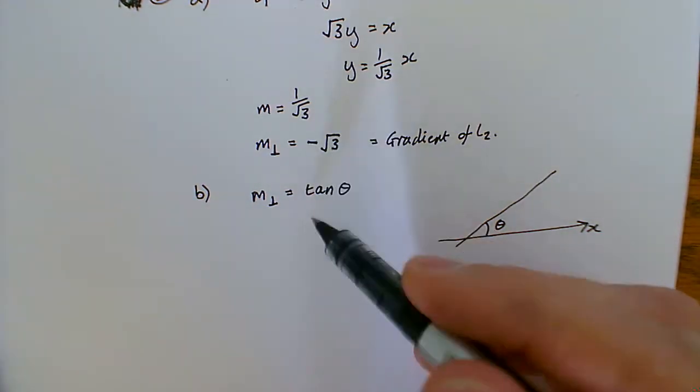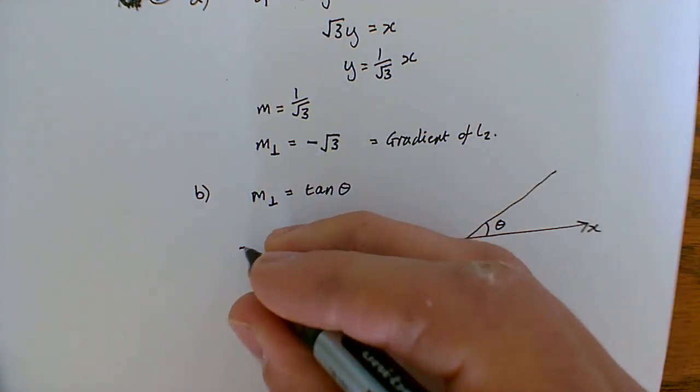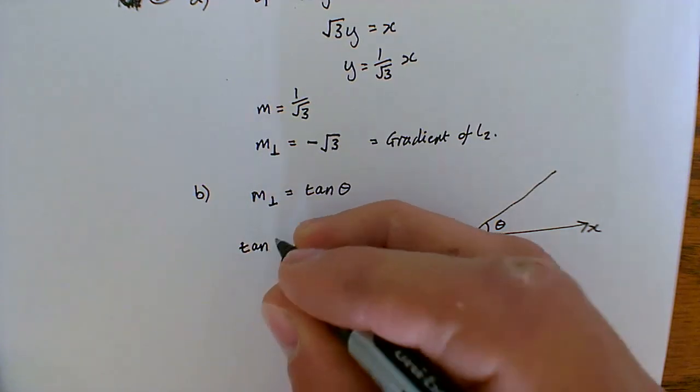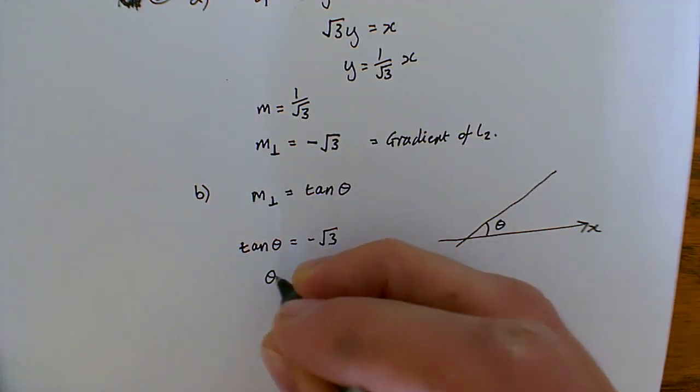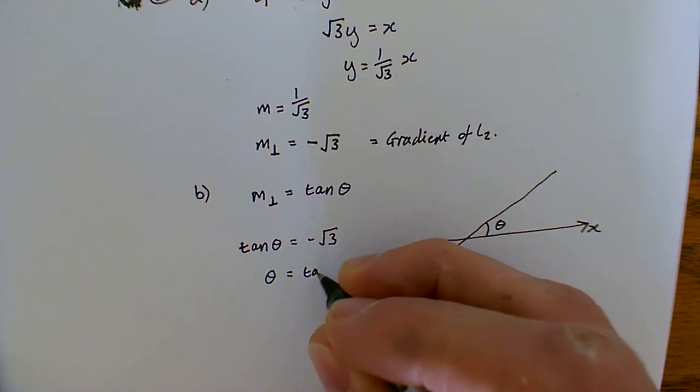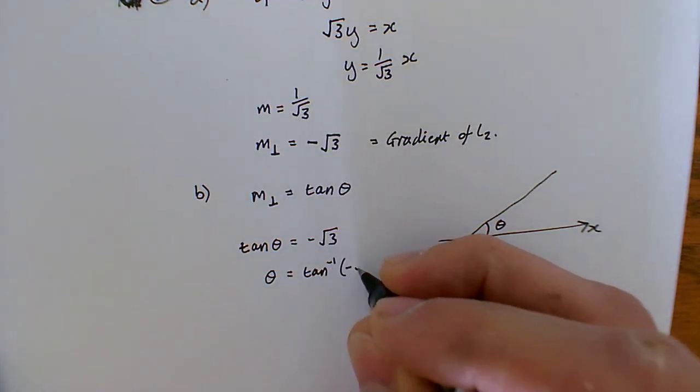Now, we're going to have a slightly weird answer in this case, because we're going to get tan theta equals minus root 3. Theta equals tan to the minus 1 of minus root 3.